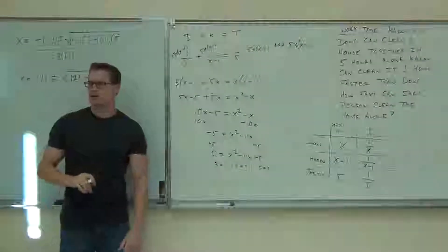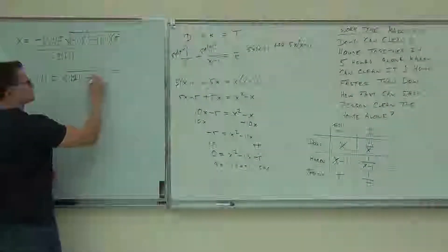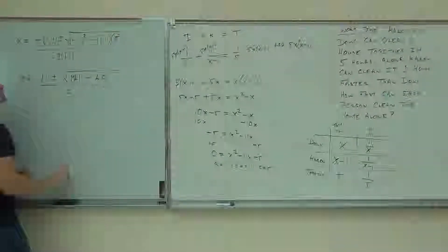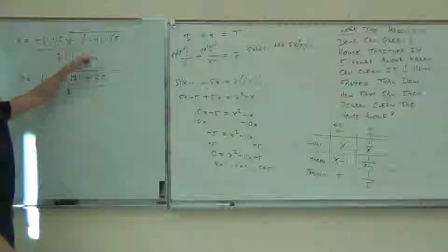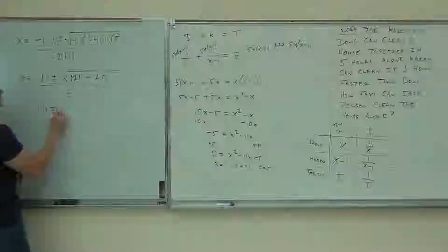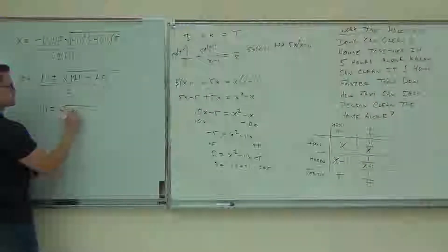How much is 4 times 1 times 5? 20. Over 2. So 121 minus 20, that means you're going to get 11 plus or minus the square root of 101.